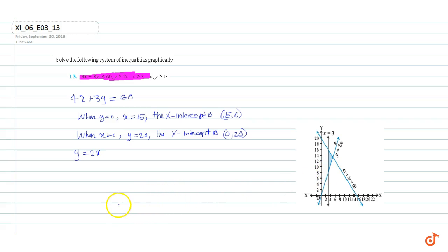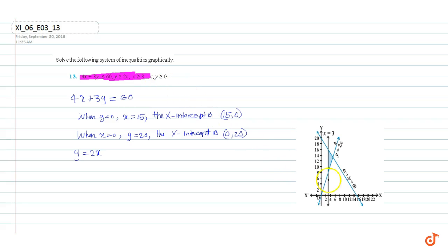The third inequality is x greater than or equal to 3. This says that the feasible region lies to the right of the line x equals 3. The fourth and fifth inequalities say that x, y are greater than or equal to 0, which means the feasible region lies in the first quadrant. Now we will consider the test point (4, 10).